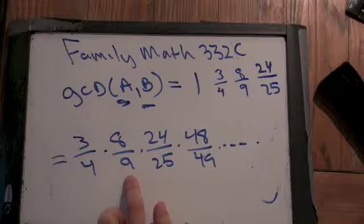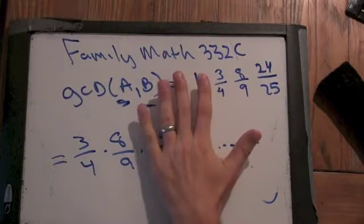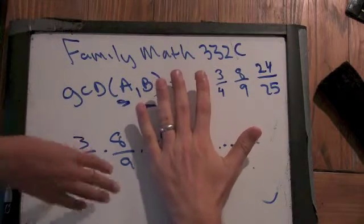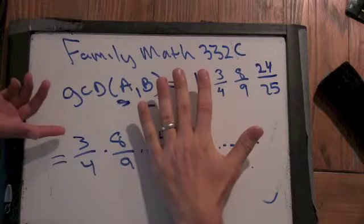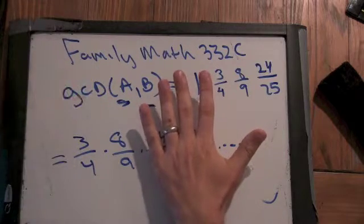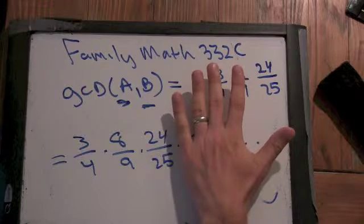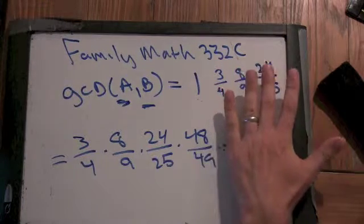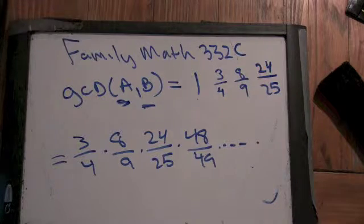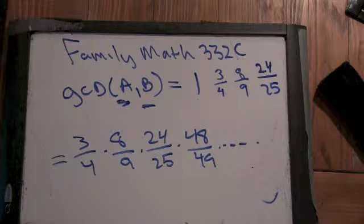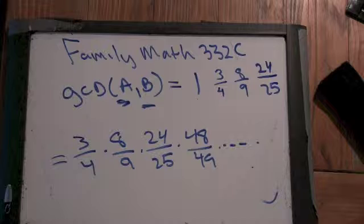I'm starting with three-fourths and I'm multiplying it by eight-ninths. So what does that mean about that first product? This is going to be smaller than three-fourths or eight-ninths. So it gets smaller. What about when I multiply by twenty-four twenty-fifths? Even smaller. What about when I multiply by forty-eight forty-ninths? Even smaller. So what do you think now is happening to the product? Well, it's getting closer and closer to zero.